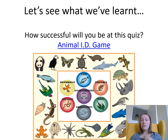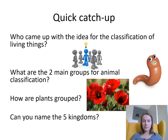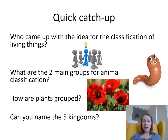And then there's a game. From this video I can't actually let you play the game, but I'll upload the PowerPoint as well, or I'll upload the game separately and you'll be able to play that animal ID game — let me know how you do. Quick quiz: who came up with the idea for the classification of living things? What were the two main groups for animal classification? What was the first thing he divided animals by? How are plants grouped? Can you name the five kingdoms? If you can name the five kingdoms, I'll be so impressed, because I could only pronounce about half of them.